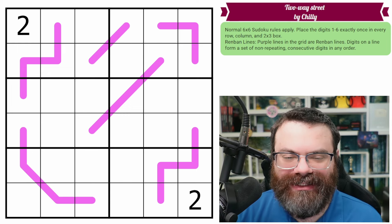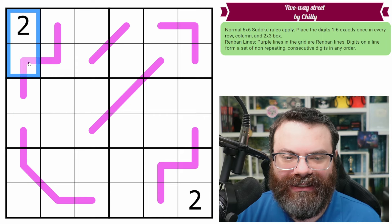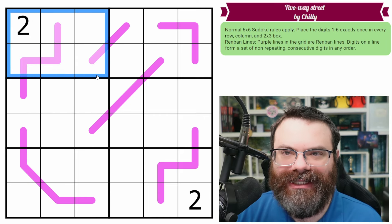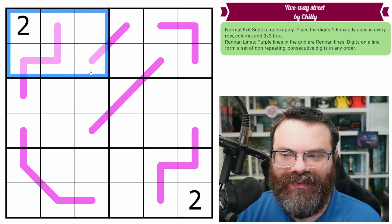So let's go over the rules. We have normal 6x6 Sudoku rules. So in every row, every column, and every 2x3 box, we are placing the digits 1 to 6 exactly once each.